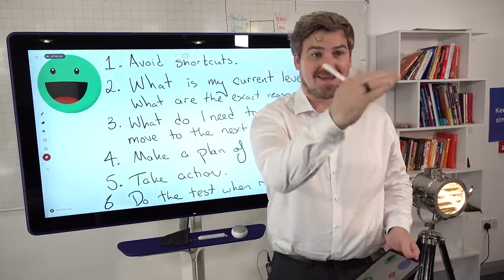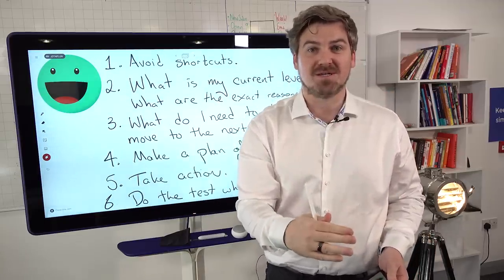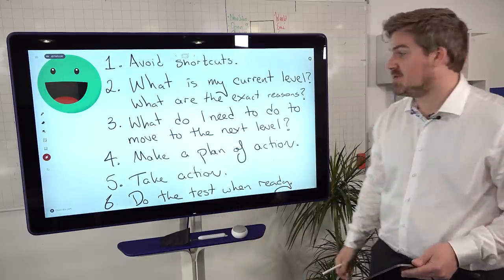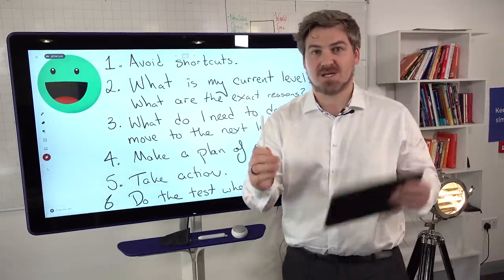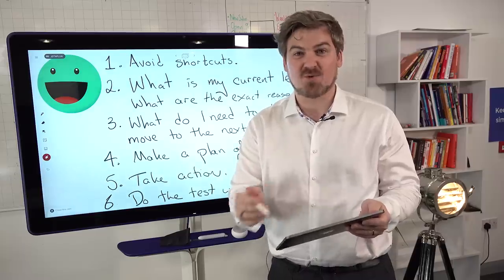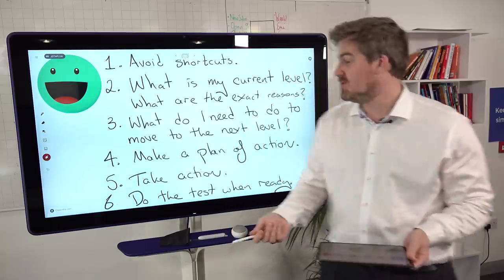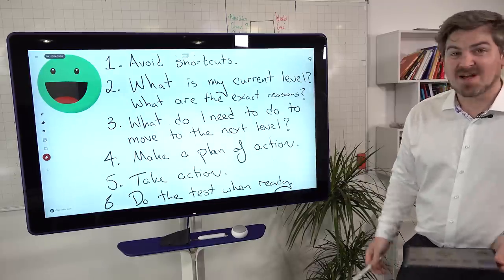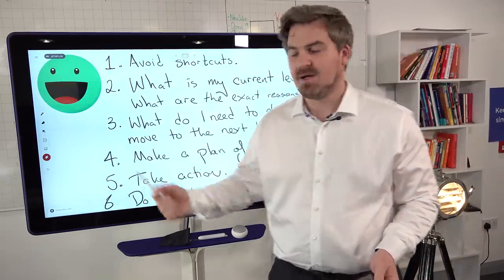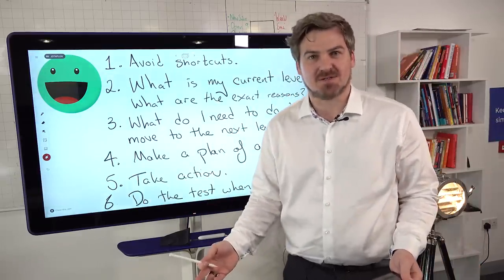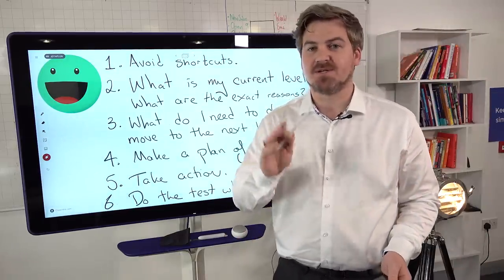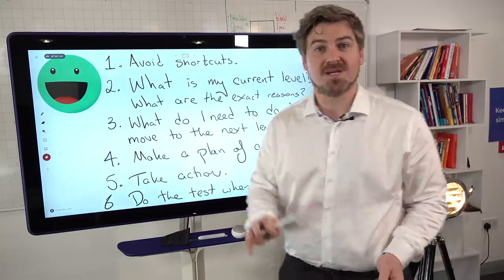Number three, what do I need to do to move to the next level? So if somebody tells you, you need to work on A, B and C, work on A, B and C. A good teacher should be able to teach you that. It is not that complicated. It's really simple once you know how. Number four, make a plan of action. Get your calendar out or get it on your iPad or whatever it is and just divide it into squares for each day and put the things that you need to do and do them. And that's the point number five, take action, actually do the things. People who rely on things like shortcuts and hope and luck, the reason they fail is they take no action. And number six, do the test when you're ready. Don't book the test until you know you're ready to do the test. You're not going to get lucky next time.